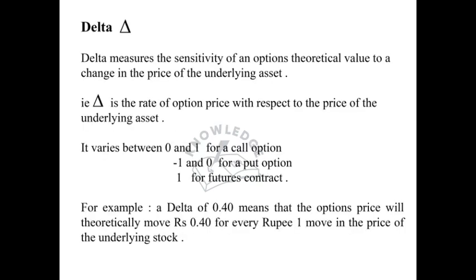The first Greek is Delta. Delta measures the sensitivity of an option's theoretical value to the change in the price of the underlying asset. That is, it is the rate of change of option price with respect to the price of the underlying asset. It varies between 0 and 1 for a call option, minus 1 and 0 for a put option, and 1 for a futures contract.